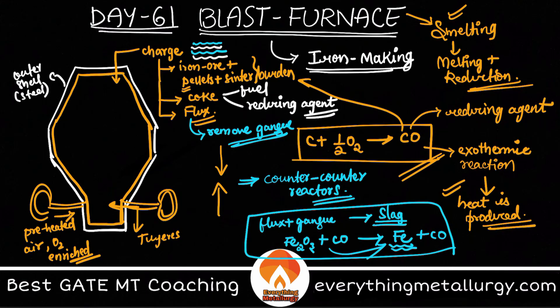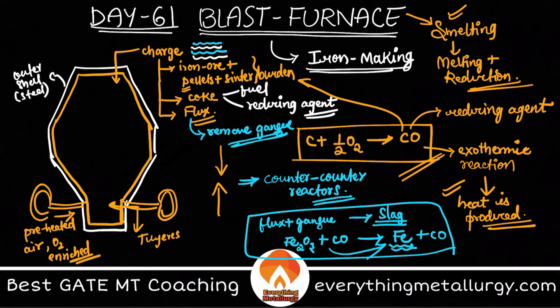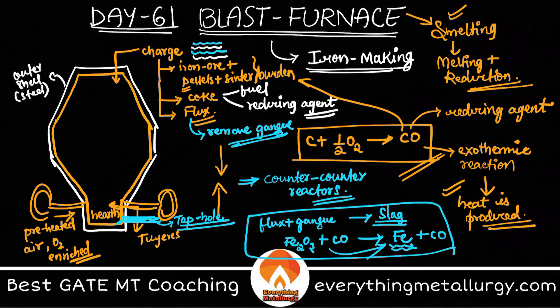At the bottom you see a cylindrical portion — this acts as a reservoir for the liquid slag and liquid hot metal. This reservoir is called the hearth. Hot metal and slag are removed through a tap hole coming out of the hearth. Previously there were two separate tap holes — one for hot metal and one for slag (called the iron notch and slag notch), but in modern blast furnaces one tap hole is sufficient.